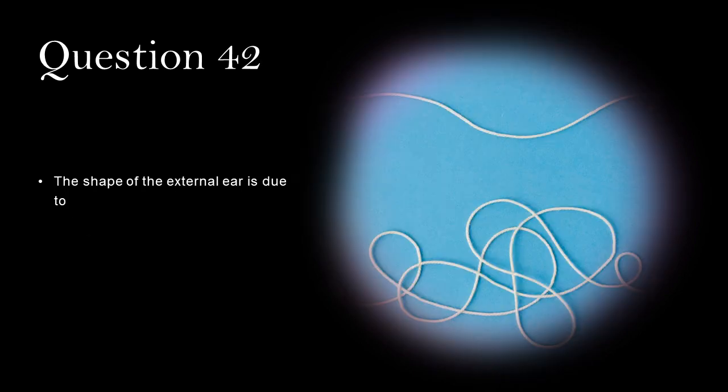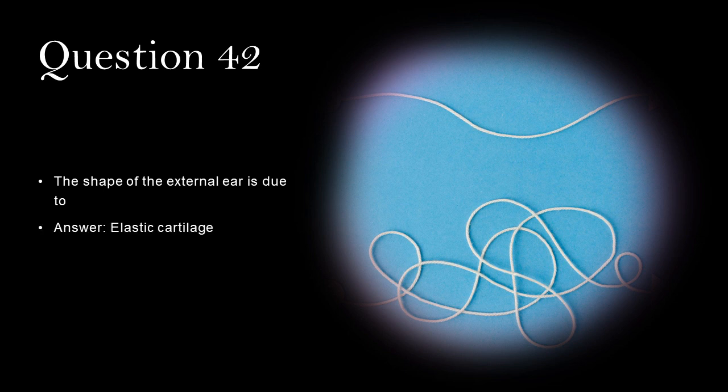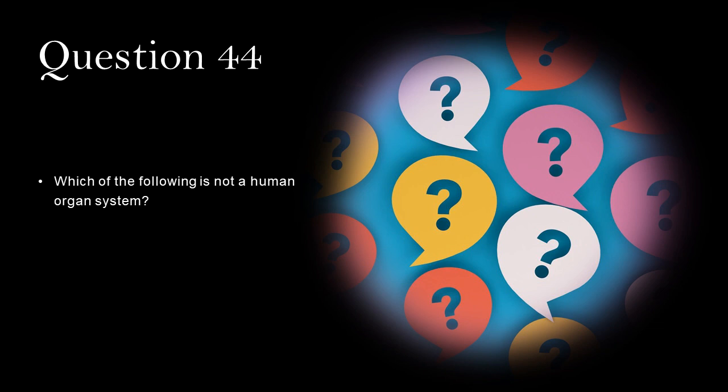The shape of the external ear is due to elastic cartilage. The external surface of the stomach is covered by serosa. Which of the following is not a human organ system? Heart, because it is a part of an organ system.